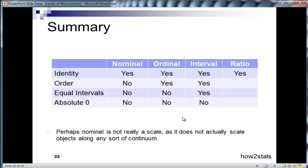Now ratio is the most informative level of measurement, because it has the property of identity, order, equal intervals, and it also has an absolute zero point. So here's a grid that displays the differences between the levels of measurement, and how they are increasingly informative, from nominal to ratio.